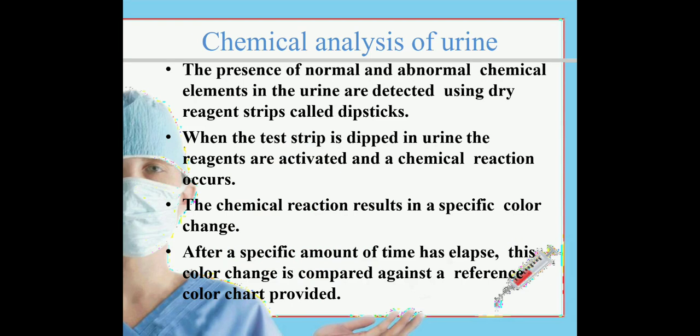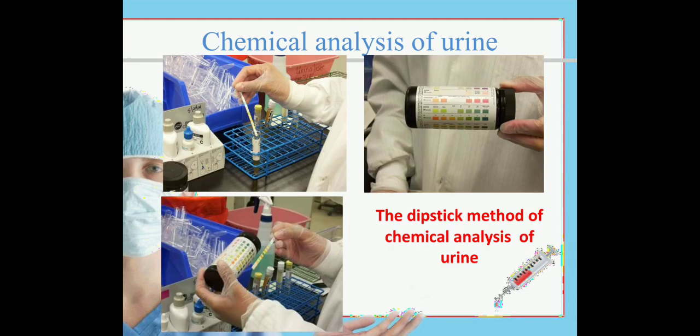The presence of normal and abnormal chemical elements in urine are detected using dry reagent strips called dipsticks. When the test strip is dipped in urine, the reagents are activated and a chemical reaction occurs, resulting in a specific color change after a specific amount of time. This color change is compared against a reference color chart provided with the dipstick.